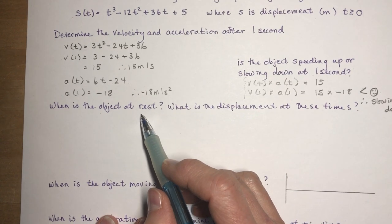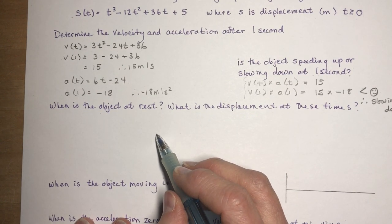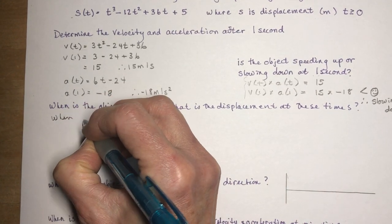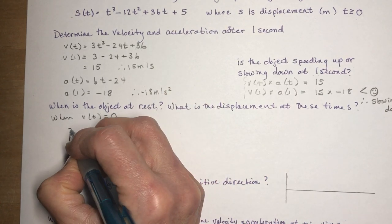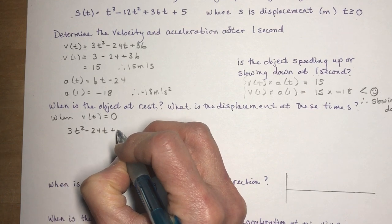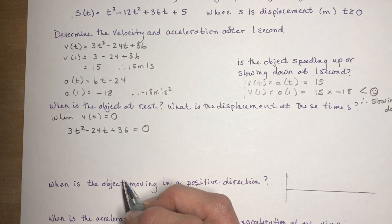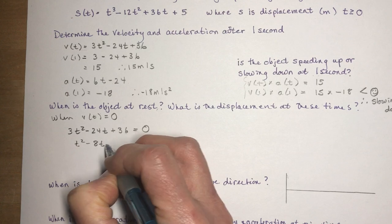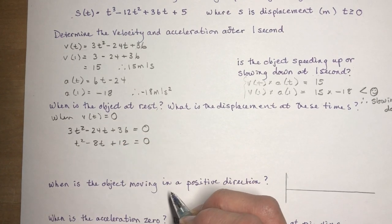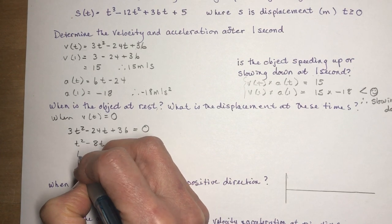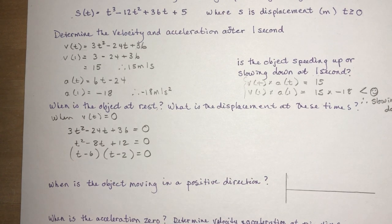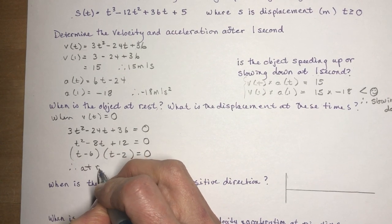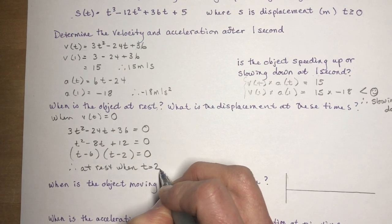When is the object at rest? The object is at rest when the velocity equals zero. So set v(t) = 3t² − 24t + 36 = 0. Dividing everything by 3 gives t² − 8t + 12 = 0. What multiplies to 12 and adds to −8? That's −6 and −2. So (t − 6)(t − 2) = 0, giving t = 2 and t = 6. The object is at rest at two seconds and six seconds.